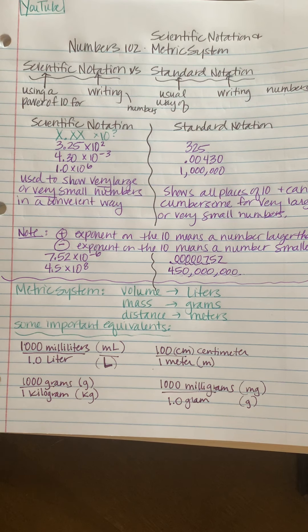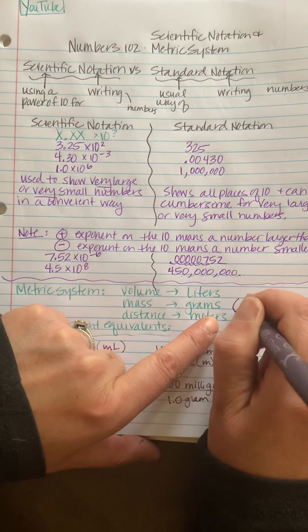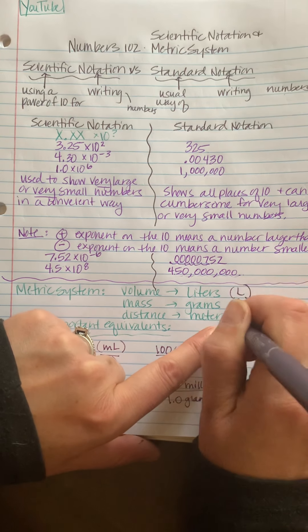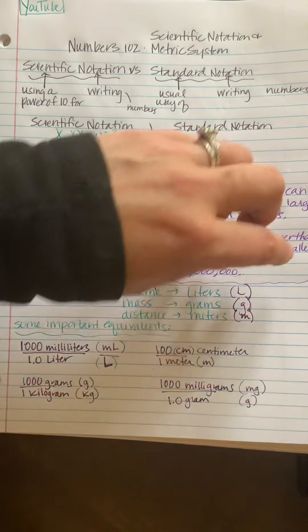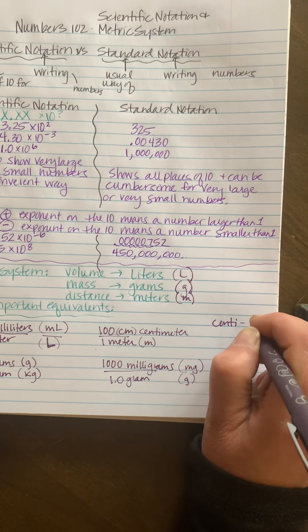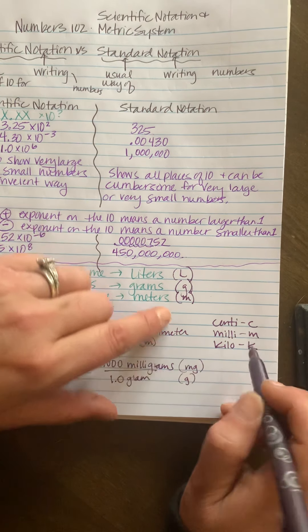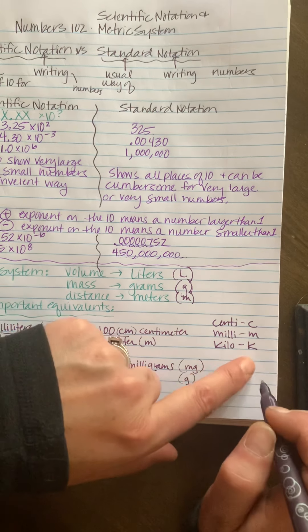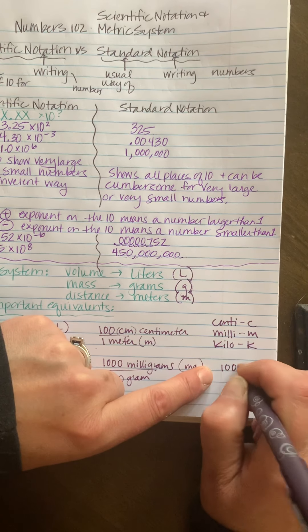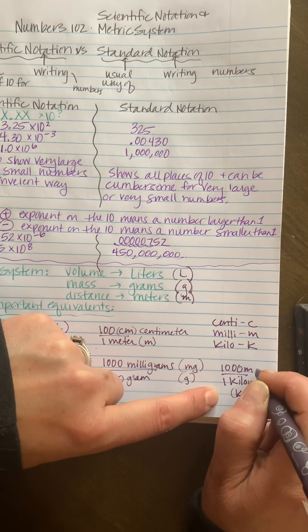When you want to indicate that you're using one of these units, the small unit like centimeter or milligram, you put a letter in front of the unit. So grams is g, liters is capital L, and meters is m. And then centi is c, milli is m, and kilo is k. So these are kind of like mix and match. You could have a kilometer, which is a kilometer, and like 1000 meters is one kilometer, and I'd write that as km, and this would be meters.